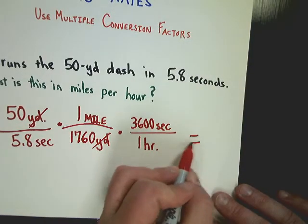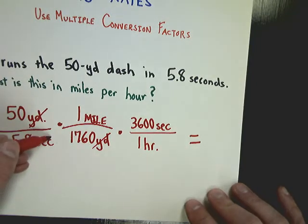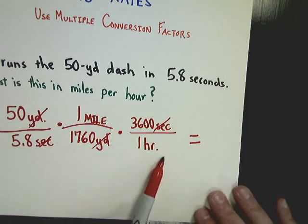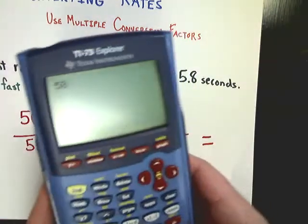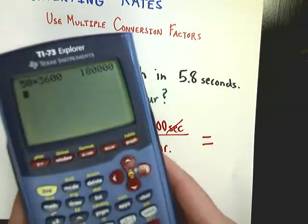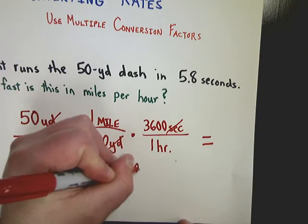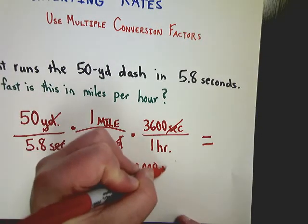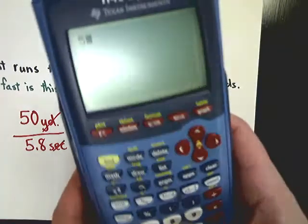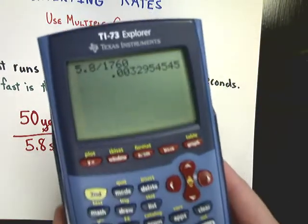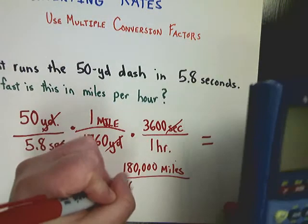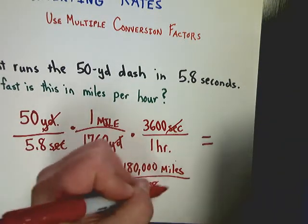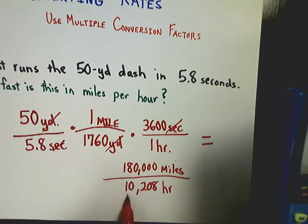Now, since I'm eliminating seconds here, the only things left for me are miles per hour. So, this should be actually sort of simple. I'm going to do 50 times 3,600. Now, I get this gigantic 180,000 thingy. And I'm left with miles as my unit over all the bottom part, 5.8 times 1,760. And I get 10,208. And that would be hours. So, I just need to do this divided by this to get my final answer.